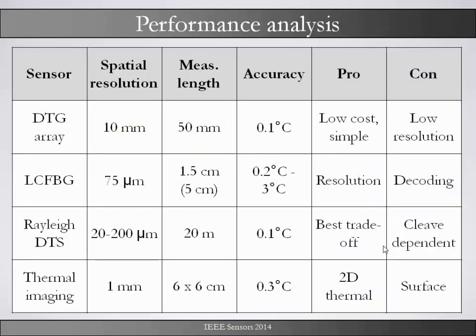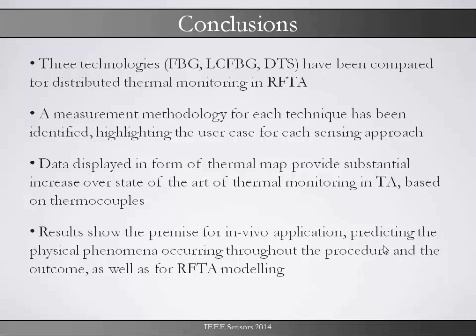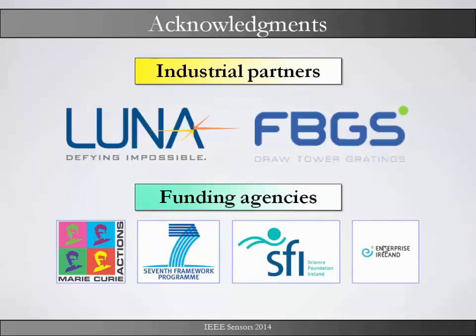In this research we tried different techniques: the FBG array, which is low cost but also low resolution; the linear chirped FBG, which has very good spatial resolution but requires much decoding; and we also used Rayleigh scattering, which shows good resolution. Thermal imaging was used ex vivo, whereas the first three measurement methods were used in vivo. At the end we showed different technologies — three with FBGs, linear chirped FBGs, and DTS — and we compared all of them. We saw some very interesting results and some modeling. With this I would like to thank you for your attention, and I am happy to answer any questions.